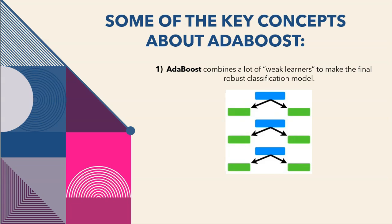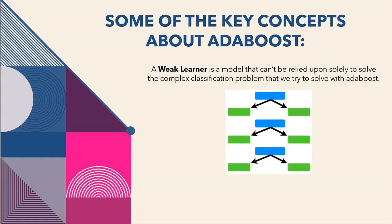AdaBoost combines a lot of weak learners to make the final robust classification model. A weak learner is a model that cannot be relied upon solely to solve the complex classification problem that AdaBoost will try to solve.